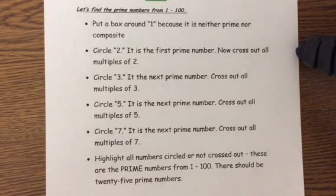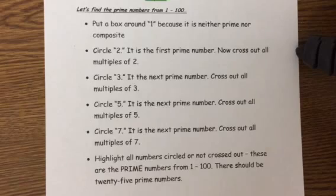So, the technique is you basically put a box around 1, you circle 2 and you cross off all the multiples of 2, and then you do the same for 3 and 5 and 7. And then, at the end, you will have all of the prime numbers are the ones that are not crossed off.